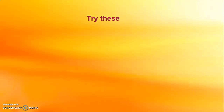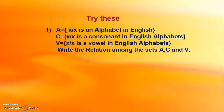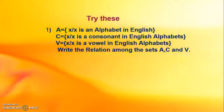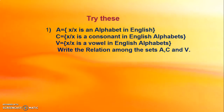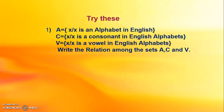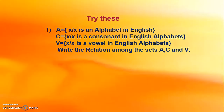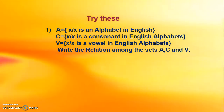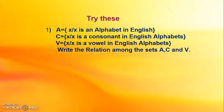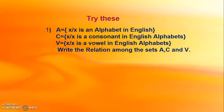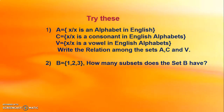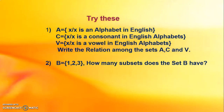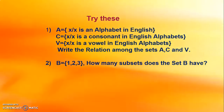Now try these problems, children. Set A is the set of all alphabets in English. C is the set of X such that X is a consonant in English alphabets, and V is the set of X such that X is a vowel in English alphabets. Try to write the relation among sets A, C, and V — check which are the subsets and which is the universal set. Second question: set B equals {1, 2, 3}, which has three elements. How many subsets does set B have? Think it over and try to write all the subsets of set B. Good luck, thank you.